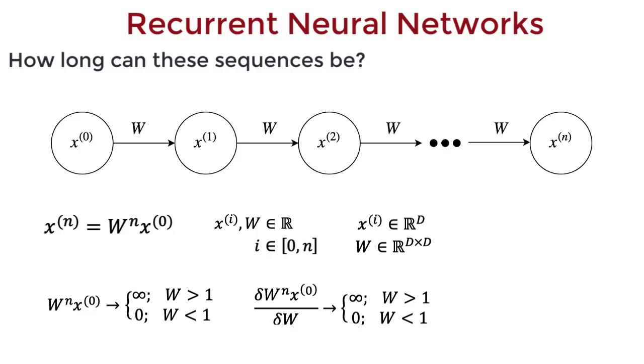In this case, for valued entries of w greater than 1, the corresponding eigenvectors of w to the n will explode. This means that the values of the input in the direction of the eigenvectors will explode to infinity, and will lose input information.